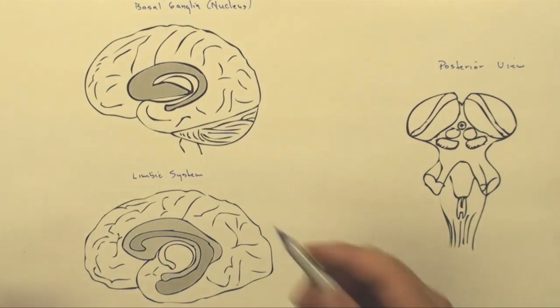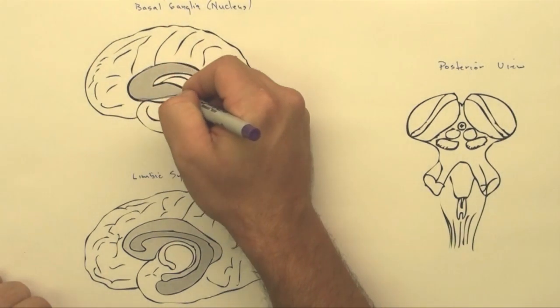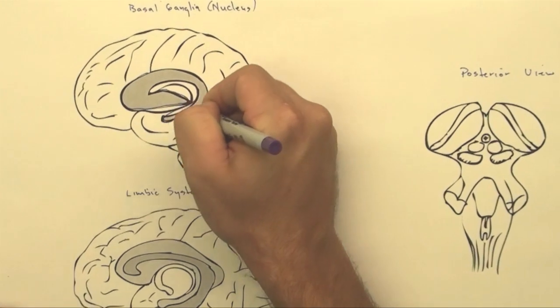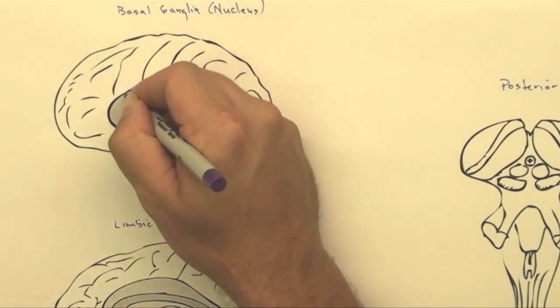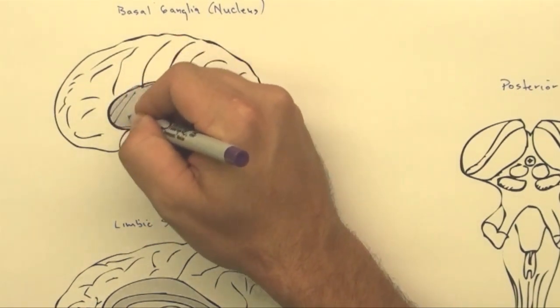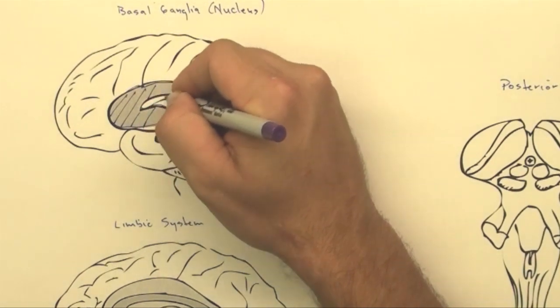So first of all, I'm going to go through this up here. And this is kind of central and it's below the cortex, below the telencephalon. And it's called the basal ganglia.